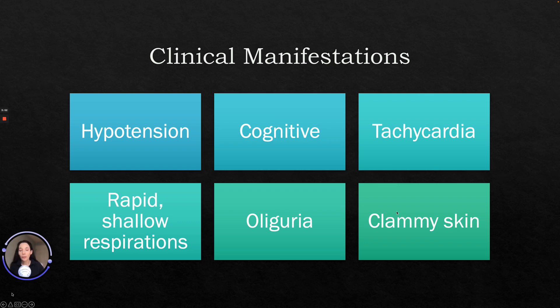You may see oliguria or decreased urine output less than 25 milliliters an hour, and you may see clammy skin that is cool and pale.